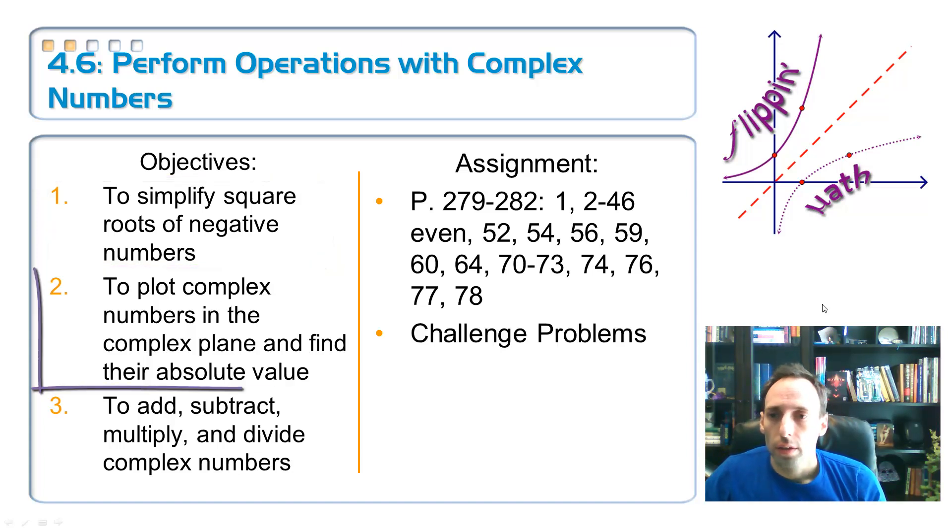We'll do that today. Second objective, plot those complex numbers in the complex plane. The complex plane kind of looks like an xy coordinate plane like this thing over here, except for a wee bit different. And then finding the absolute value. So absolute value, just like it is with real numbers, how far that thing is away from zero.